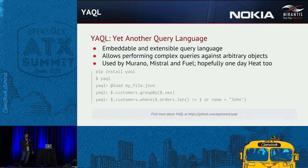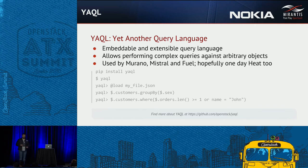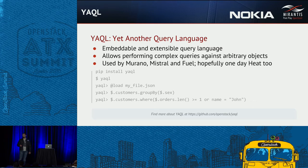Talking about MuranoPL, I must also mention YACL — yet another query language. This is an embeddable and extendable query language used by Murano, Mistral, and Fuel, and hopefully Heat at some point. In Heat, there is an initiative to replace intrinsic functions with YACL. You can do pip install YACL, run it, load a JSON file, and do queries. YACL doesn't just work on JSON — it works on any arbitrary Python object structure, and it can handle circular references in the graph.